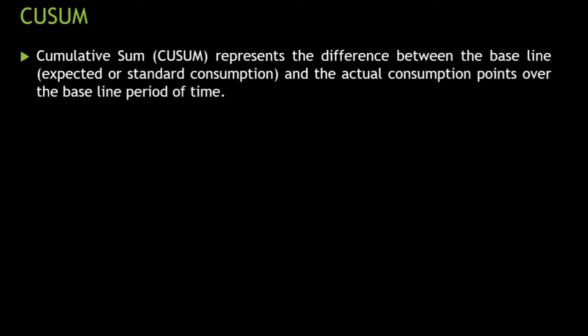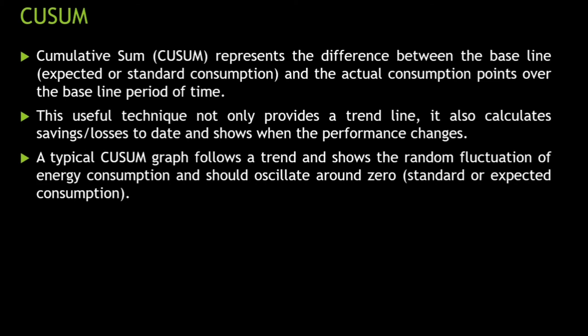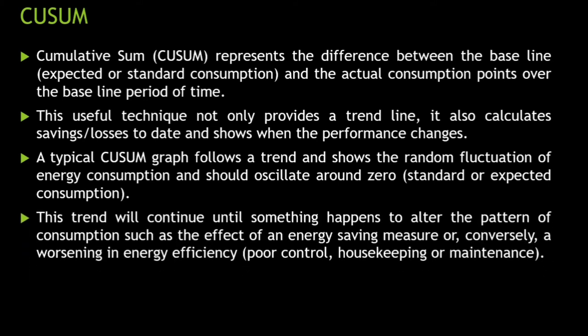Starting with what is this Cumulative Sum: QSUM represents the difference between the baseline — that is the expected or standard consumption — and the actual consumption points over the baseline over the period of time. Once we cover the examples, you will come to know what it is exactly. This useful technique not only provides a trend line, it also calculates the savings and losses to date and shows when the performance changes. A typical QSUM graph follows a trend and shows the random fluctuations of energy consumption and should oscillate around 0.